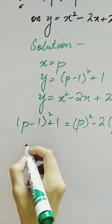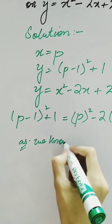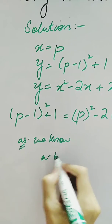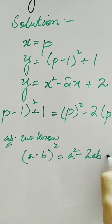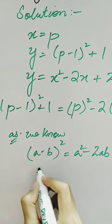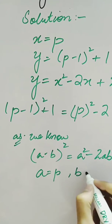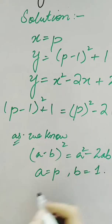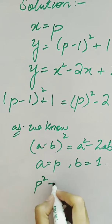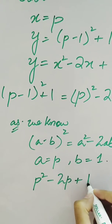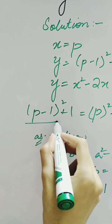As we know from the formula, (a - b)² = a² - 2ab + b². Here, a = p and b = 1. Putting these into the formula, we have p² - 2p + 1. We have just opened this bracket with the help of the formula.